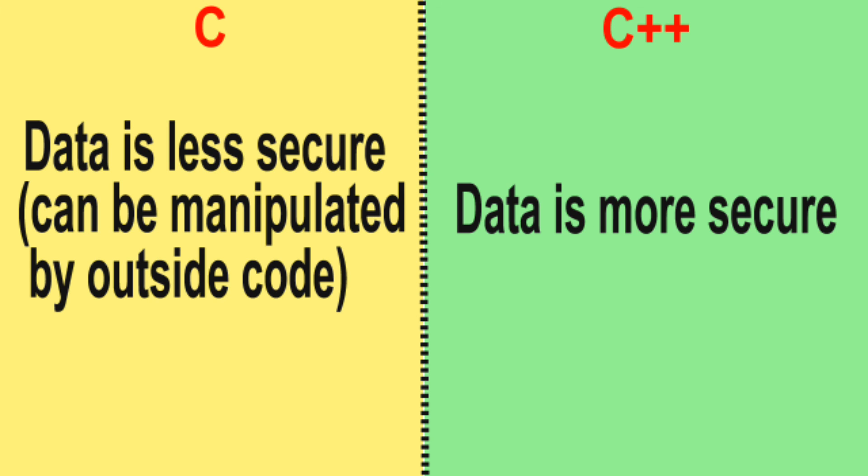Difference number 16: In C, data is less secure and can be manipulated by outside code. In C++, data is more secure.